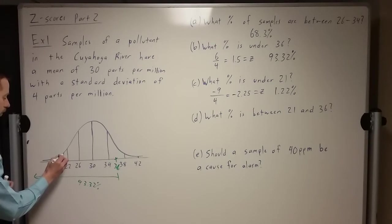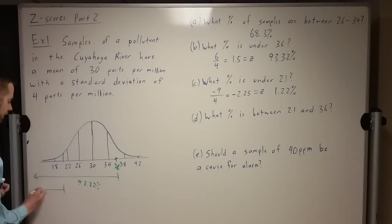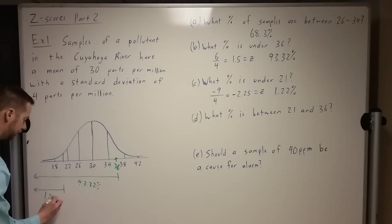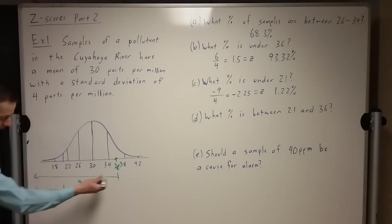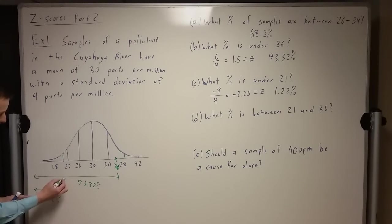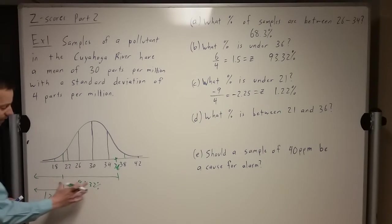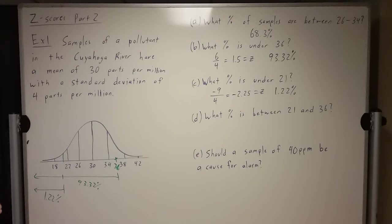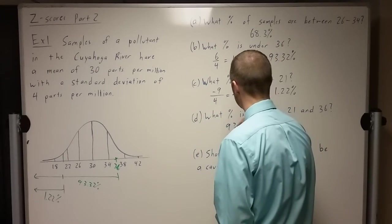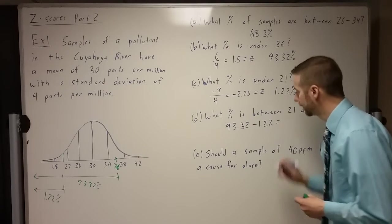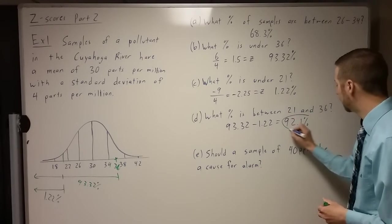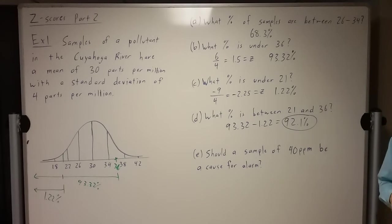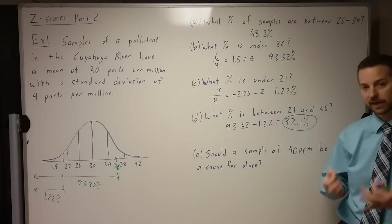And then right around here, we've got 21. And what we're saying is, from there, down forever, there's 1.22 percent of the data. If I want just what falls in this range, then basically if 93.32 is everything from here down forever, and 1.22 is from here down forever, then I really just want to take off this 1.22 percent that's on the end to get what's in this interval. So it's really just a subtraction of these two. I'm going to do 93.32 minus the 1.22. And that'll give us the percentage that falls between those two numbers. So we should expect 92.1 percent of our samples to fall between 21 and 36. That's how we find an asymmetric interval using z-scores.